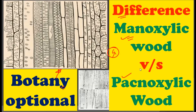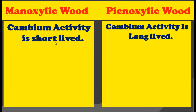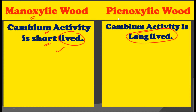In this lecture, we are going to see those differences. The very first difference between the Manoxylic wood and the Pachyxylic wood is that cambium activity is very short-lived in Manoxylic wood. The cambium activity, which starts the secondary growth and separates the xylem and phloem from one another, is very short-lived in Manoxylic wood, while this activity is very long-lived in Pachyxylic wood.